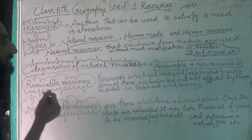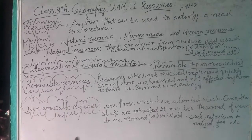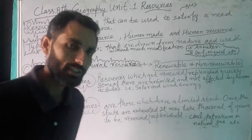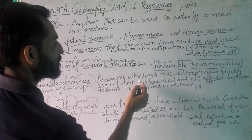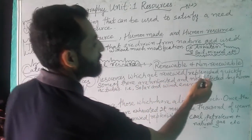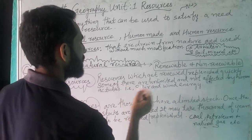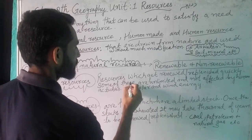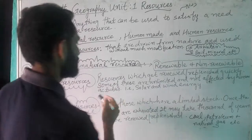We categorize natural resources further. How many categorizations are there? We use renewable and non-renewable. Renewable resources are those which get renewed or replenished quickly. Some of these are unlimited and not affected by human activities.